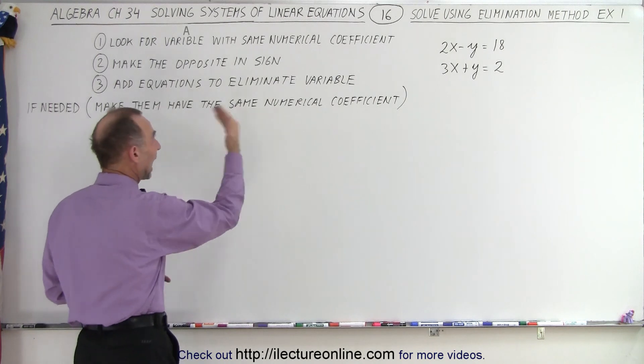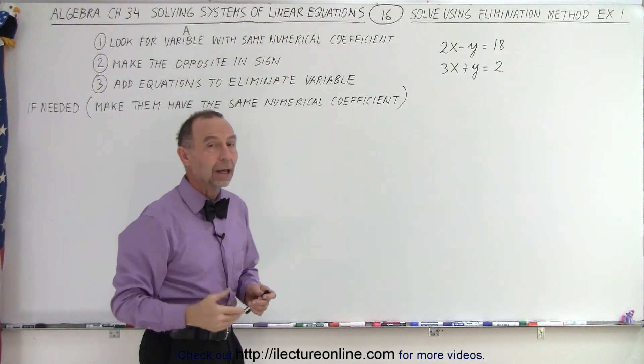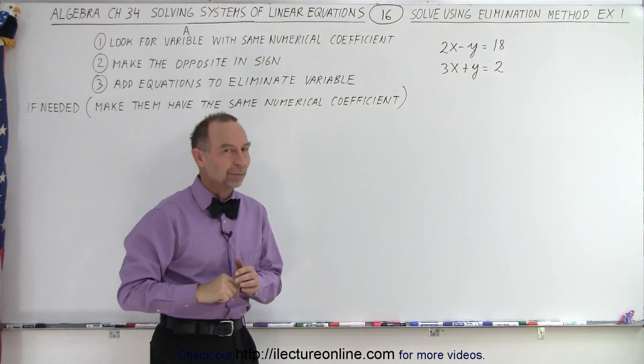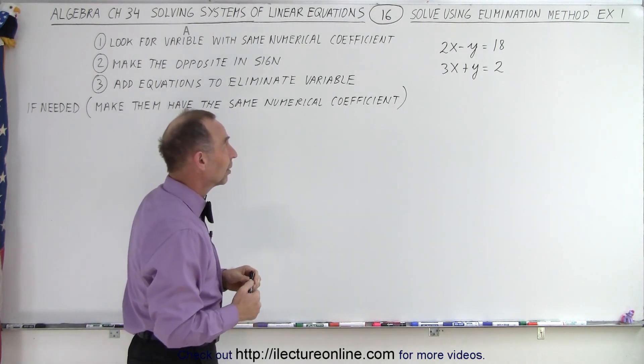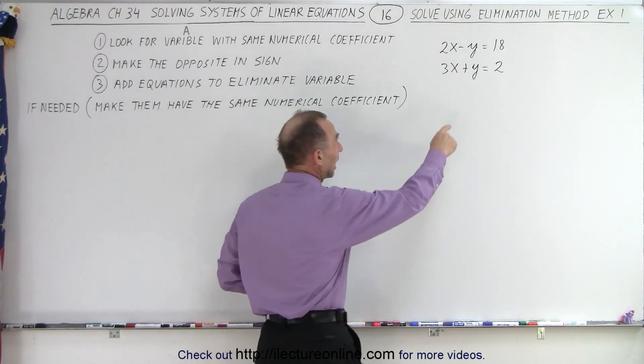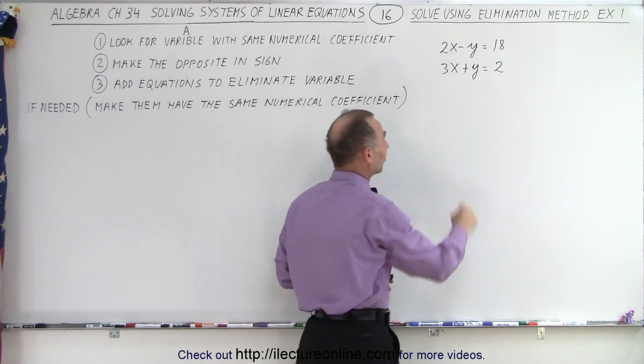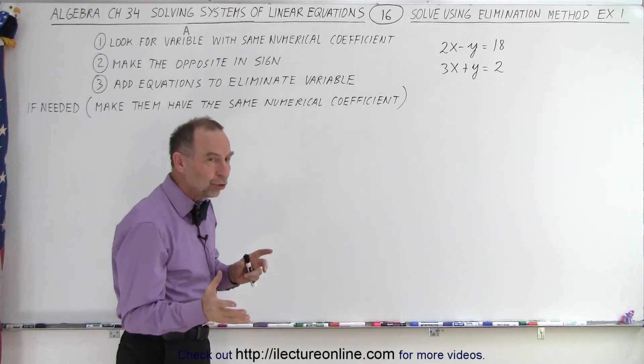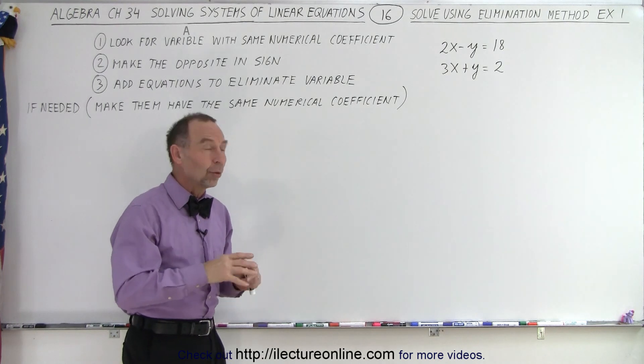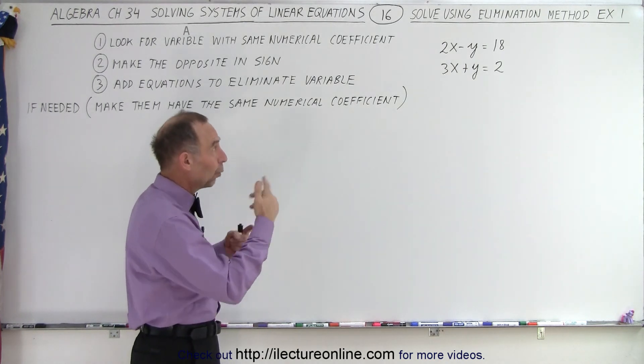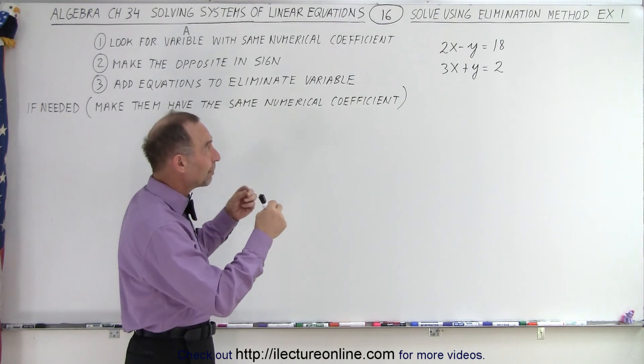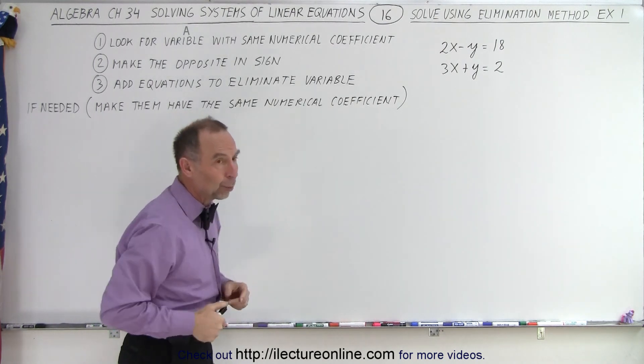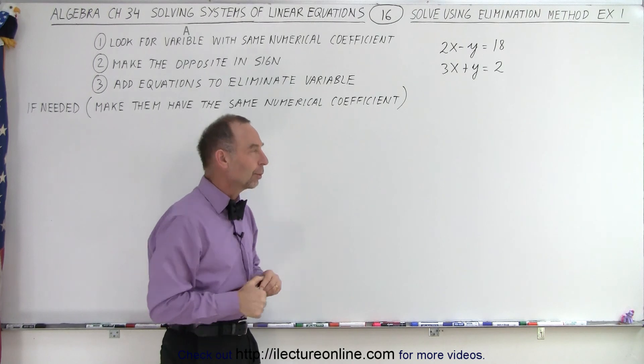And then the third step, we simply add the two equations to eliminate that particular variable. Notice also that if you can't find a variable like that, let's say that they were not the same numerical coefficient, and neither was the x variable, then you should make them the same first. So what you do then is you multiply both of the equations, or maybe one of the two equations, to give it a particular number to match up with the numerical coefficient of the other equation.